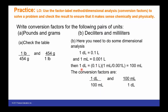What we did here was take what one deciliter equals in liters and then use our conversion factor between milliliters and liters. One deciliter equals 0.1 liters; one milliliter equals 0.001 liters. From this calculation, we determine that one deciliter equals 100 milliliters, giving us conversion factors we can use in later calculations.